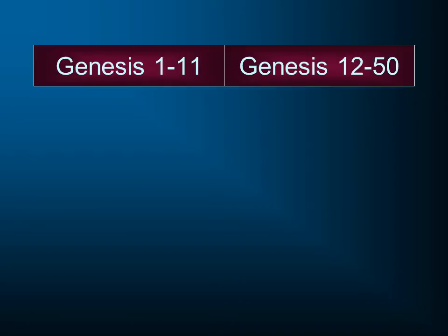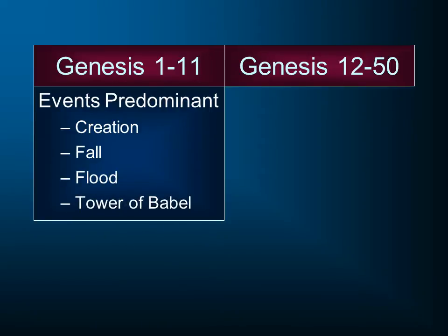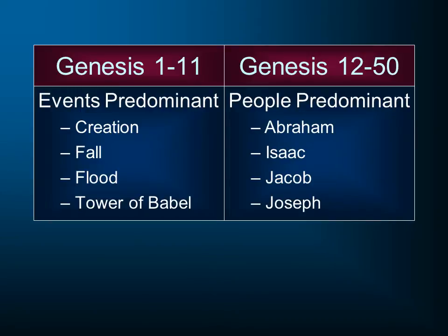The book of Genesis can itself be divided up into two sections — not two different authors, but two different primary topics. Chapters 1 through 11 give us four major events: the creation, the fall, the flood, and the Tower of Babel. Then in chapter 12 through 50, the larger part of the book, we're going to have four major people: Abraham, Isaac, Jacob, and the sons of Jacob — but especially one son, Joseph.